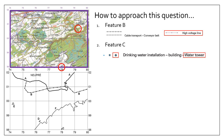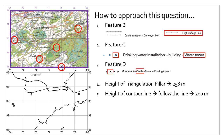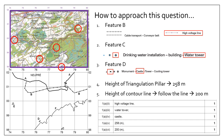For feature D, I need to match up the correct symbol — it's the middle one, therefore it's a castle. Then the height of the triangulation pillar: next to it is written 258, so I write 258 meters. And the contour line F, if I follow that line around, it comes to exactly 200 meters because it's a contour line. Checking against the mark scheme, all correct.